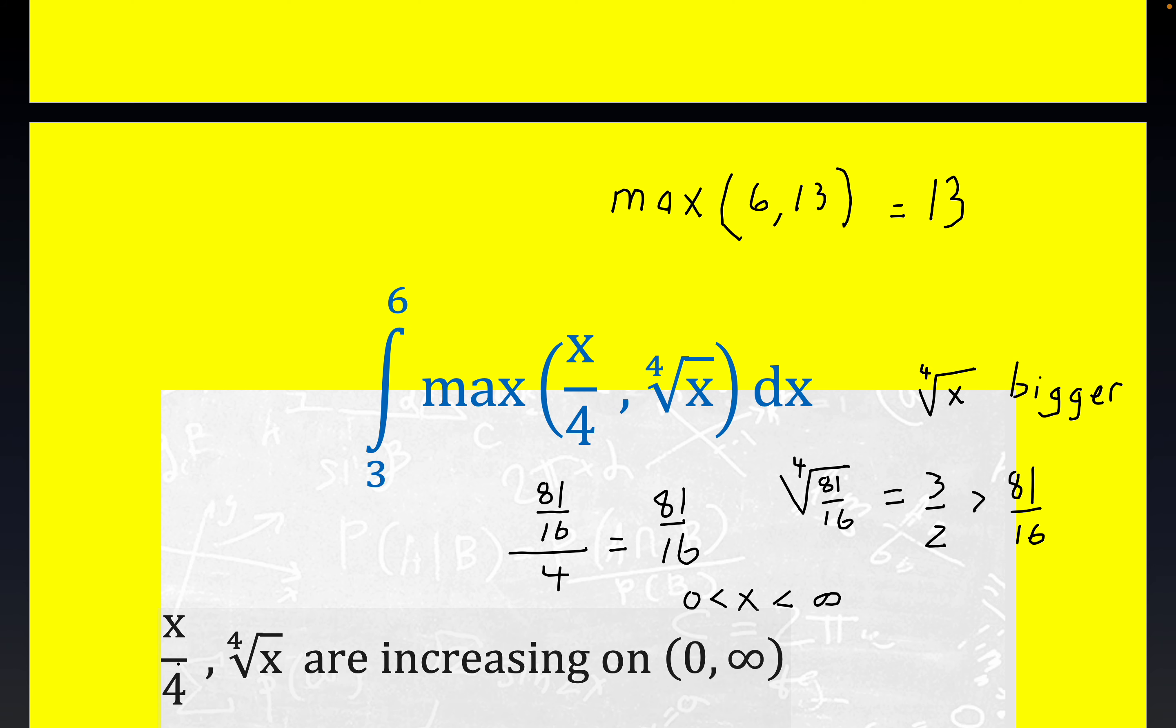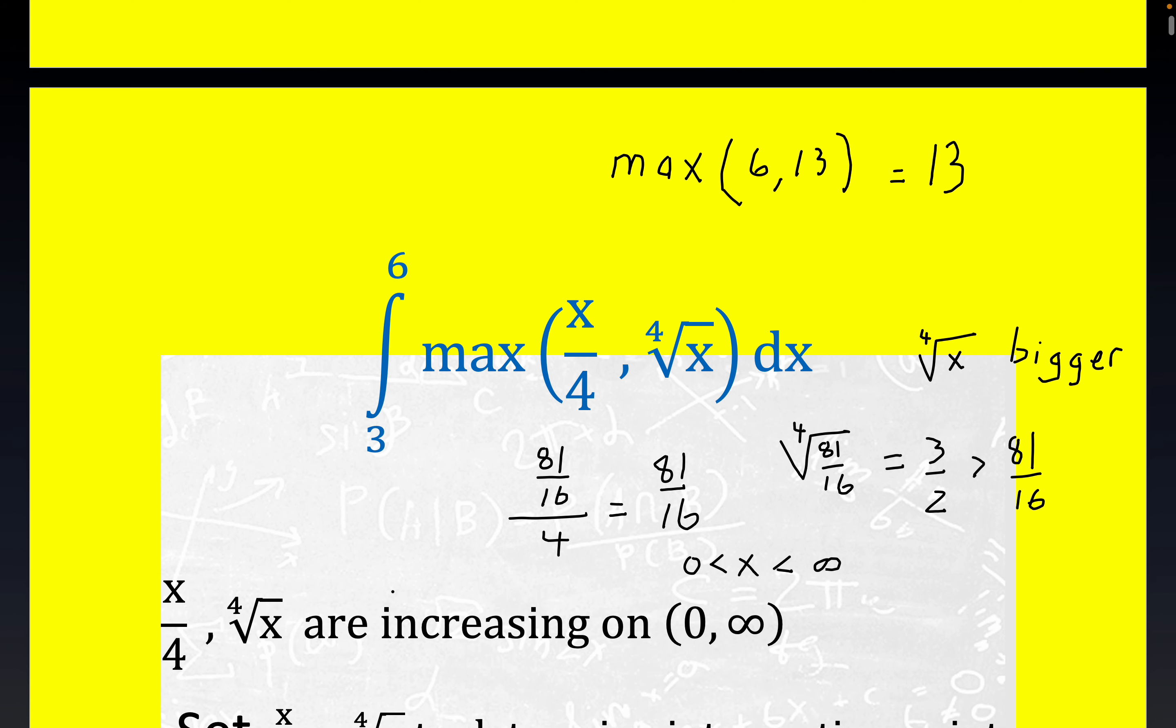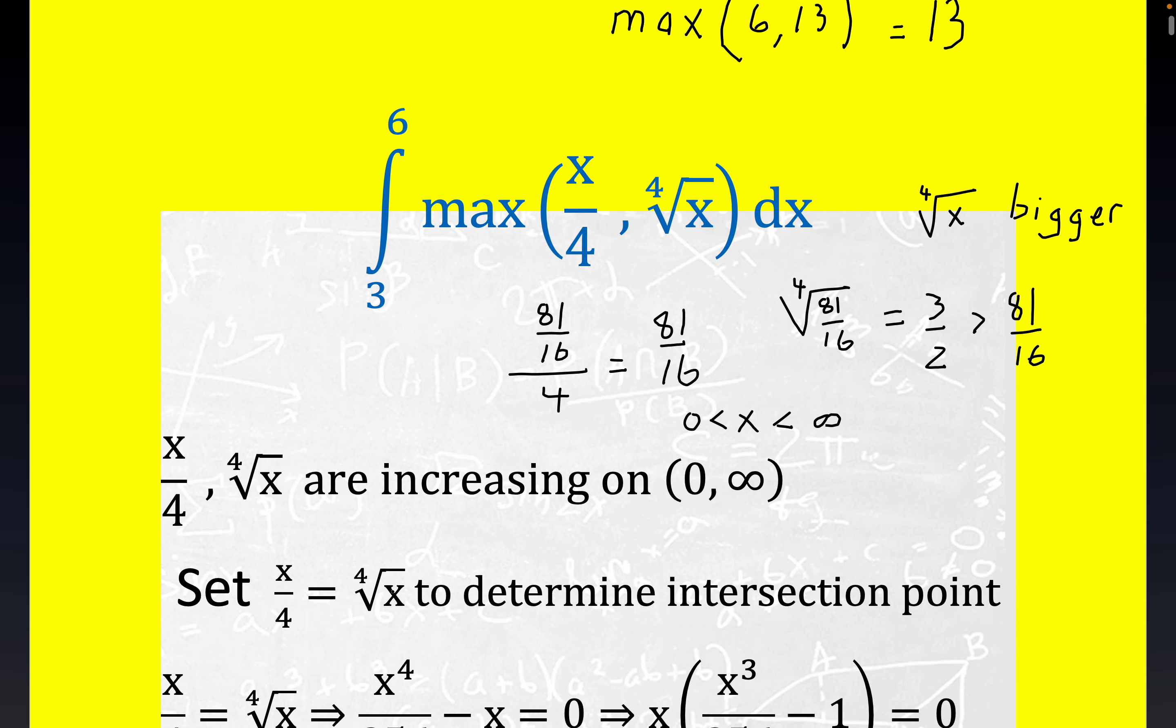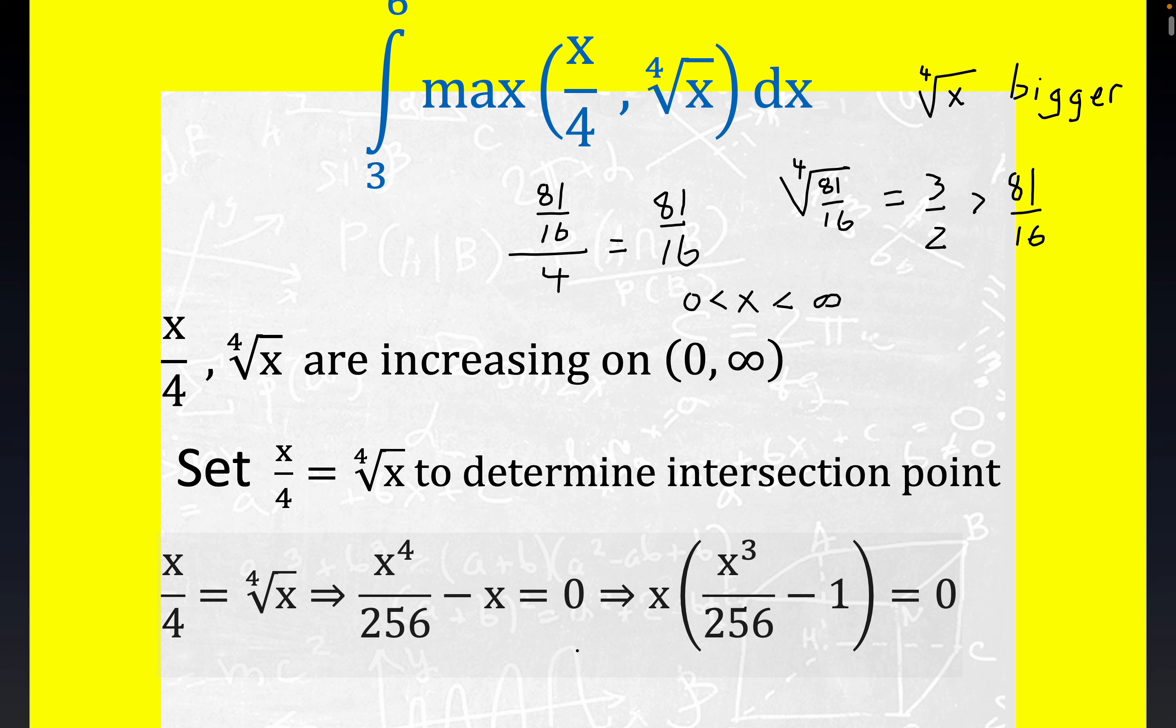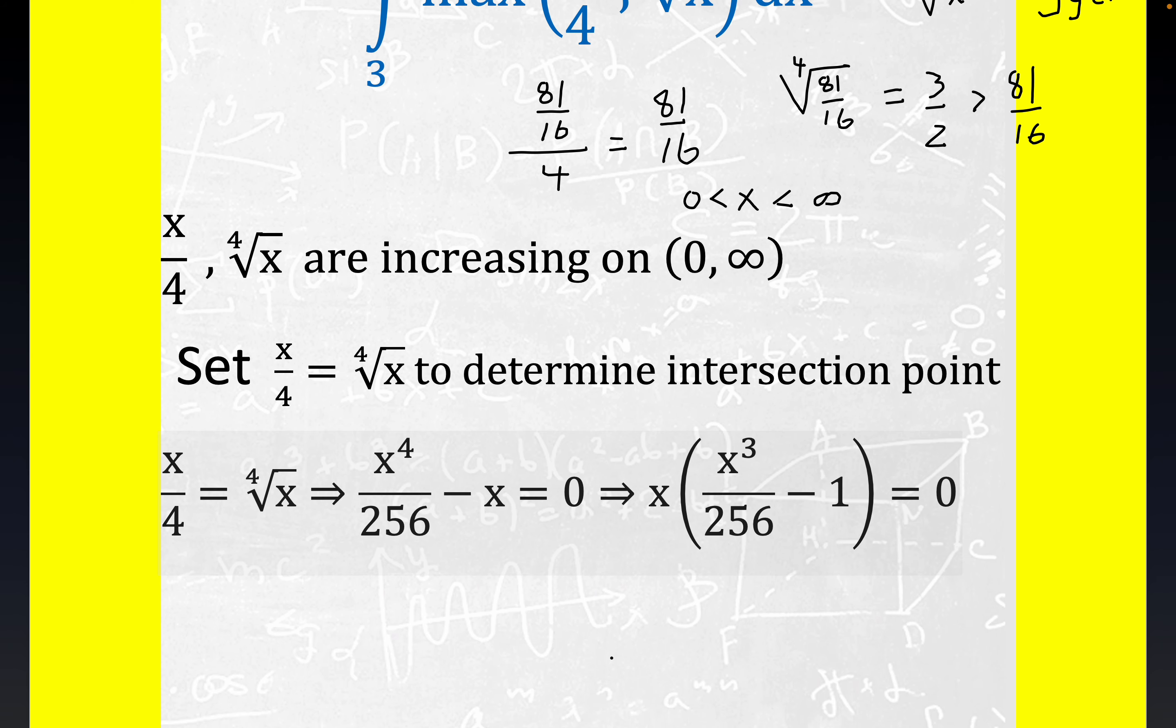We'll couple that with the fact that both of these functions are increasing. So it makes quite a bit of sense to find out where the graphs intersect. That's pretty quick work right here. That would happen when x cubed is equal to 256. If you put 256 right here, you get 1 minus 1 equals 0.